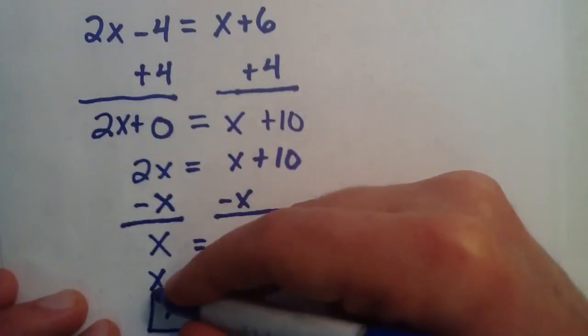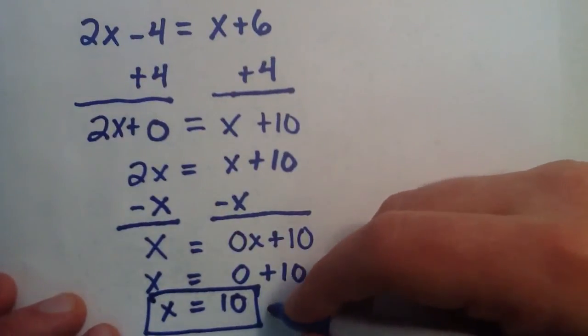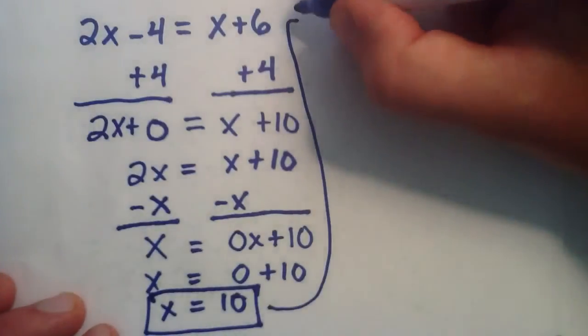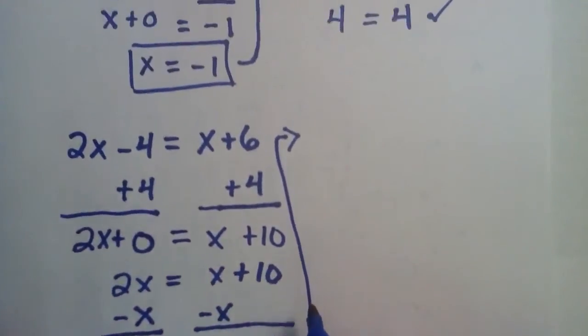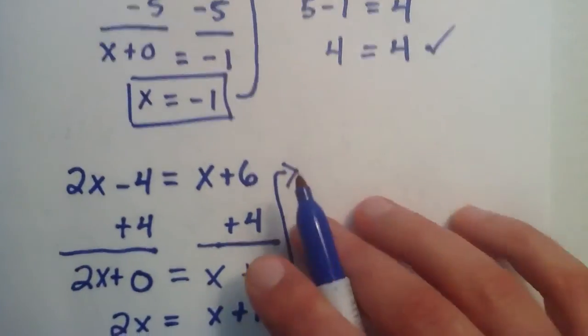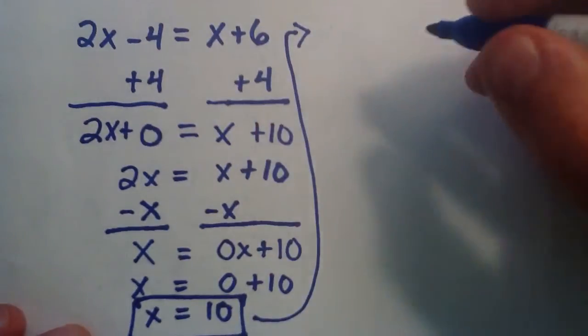So, that is our solution. So, let's check to make sure this is the correct solution. We're going to put a 10 everywhere there was an x. And if we did it correctly, we should have a similar statement. We should have some number equals the same number. So, let's try it. It doesn't have to be 4 equals 4. It'll probably be something else. But let's give it a try.